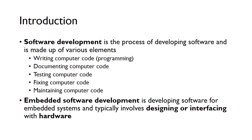Software development is a process of developing software and is made up of various aspects. One aspect is actually writing the computer code, often called programming or coding — this is typing the code into the computer. Another part is documenting the computer code, writing documentation that says what the computer does and how it does it, so other people who use your code can understand how it works.